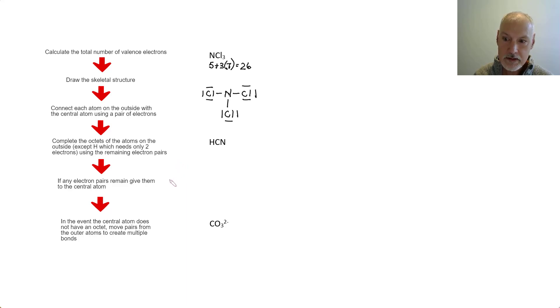I now go to this step. If any of the pairs remain, I give them to the central atom. So that would be it. That would be the Lewis formula for nitrogen trichloride.